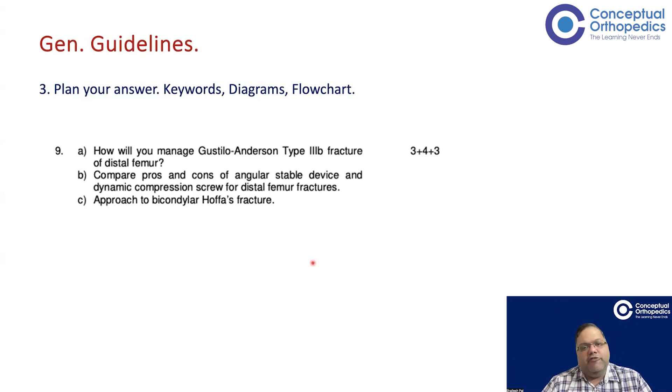For example, look into this question. How will you manage Gustilo-Anderson type 3B fracture of distal femur? Very, very, very specific question. And asked for three marks. So the thing is, open fracture, you can really write pages and pages together. Any candidate who is giving a DNB final exam can write a lot of pages on this. But what is asked? How will you manage Gustilo-Anderson type 3B? And that is for three marks. Now three marks, you know.